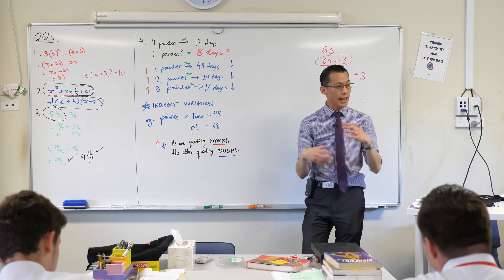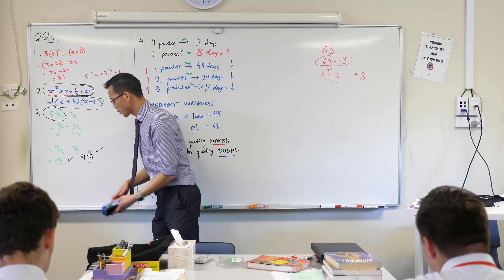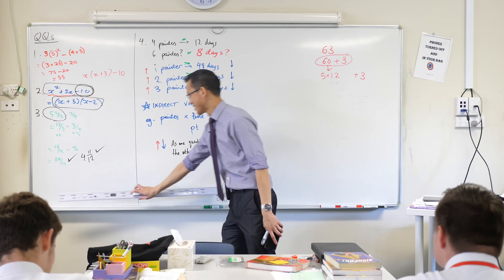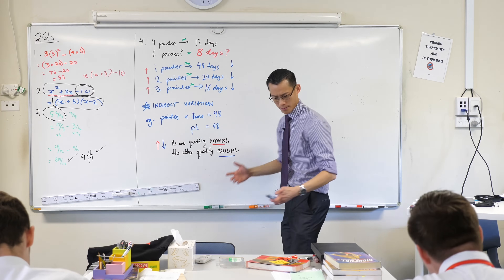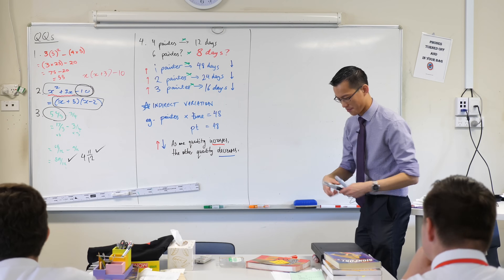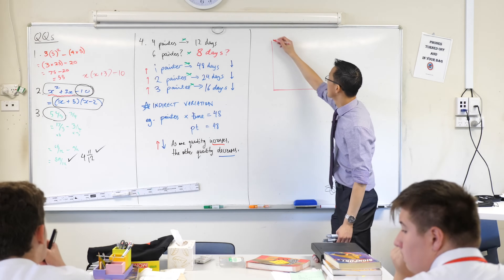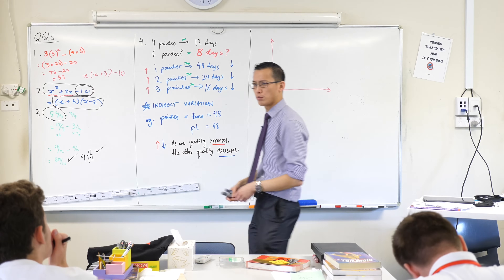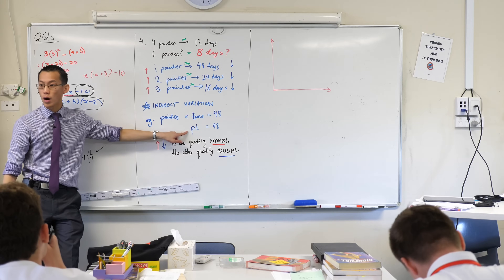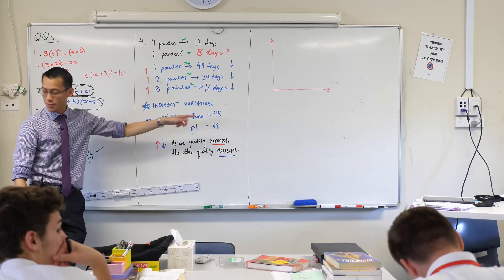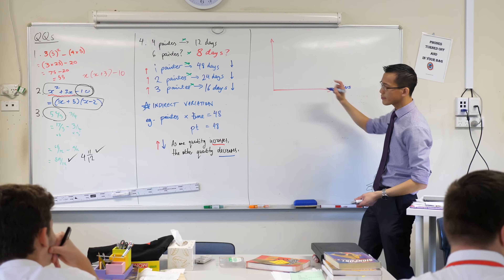So PT = 48 — we can actually draw and show this relationship visually. Underneath what you've got, use a ruler if you have one, and draw a set of axes. We're just going to do a quarter of the Cartesian plane. Normally we label the horizontal axis x and the vertical y, but this time I'm interested in painters and time. So I'm going to make the horizontal axis 'painters' and the vertical one 'time'.